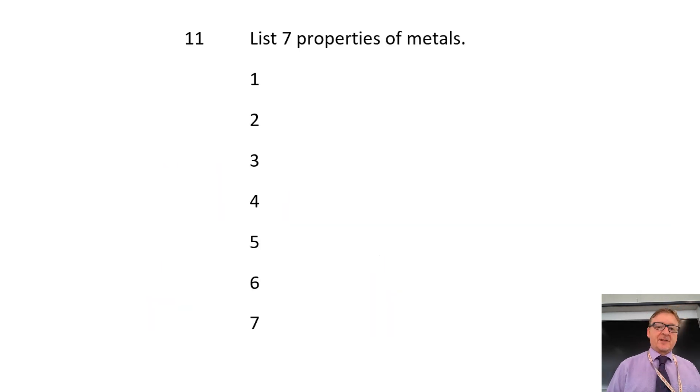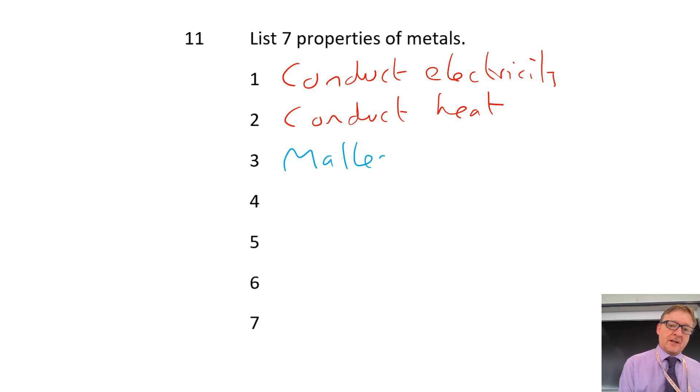So this one now is list the seven properties of metals. The first one is conduct electricity. That is then all to do with the delocalized electrons. Conduct heat. They are then very similar. We've then got malleable, which means it's bendy. We've got ductile, which means it's stretchy. You can stretch it. You've got lustrous, which is basically shiny. And then the last two are high melting point and a high boiling point.